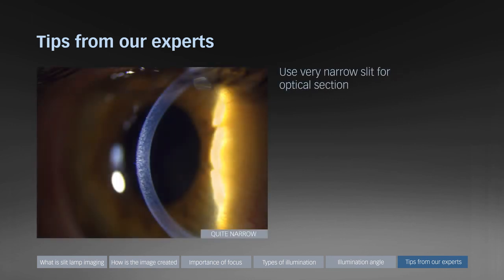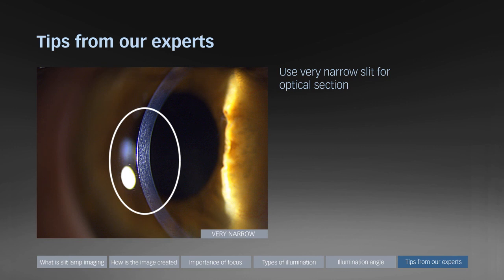Use very narrow slit illumination with maximum slit intensity for optical sections, otherwise you will lose detail. Here an example of a quite narrow slit where no detail in the cornea is visible. Here an example of a very narrow slit which reveals the different layers of this healthy cornea.